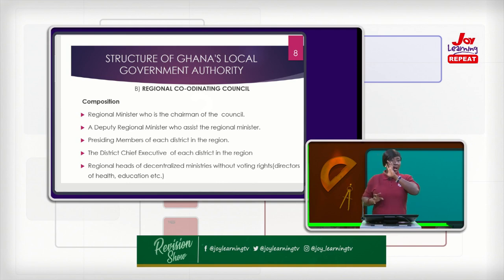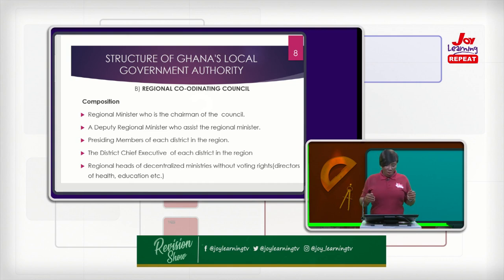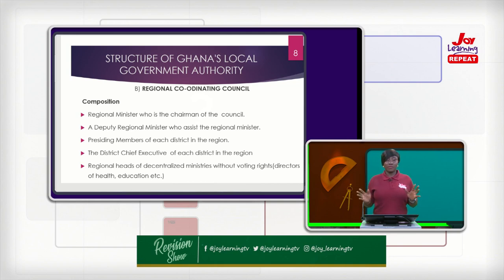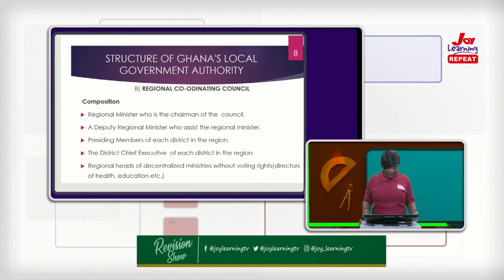As part of this council, but they do not vote, are what we call regional heads of decentralized ministries. When we say decentralization, we say that it is a system or a form through which governance is done — where functions and powers of government are shared between the central government and other units of government, such as the local government. Decentralization means functions and powers are shared between the central government and local units or governmental units under the central government.